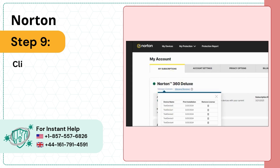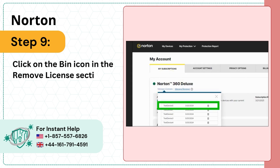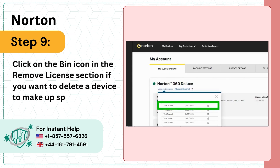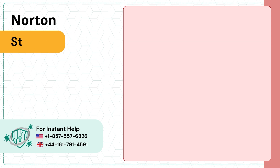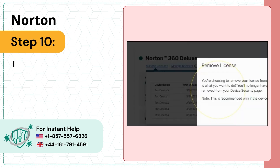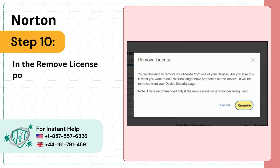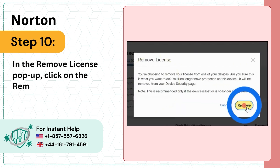Step 9: Click on the bin icon in the Remove License section if you want to delete a device to make space for another one. Step 10: In the Remove License pop-up, click on the Remove button.